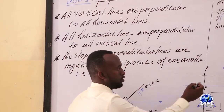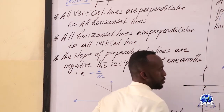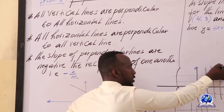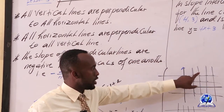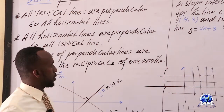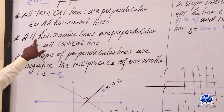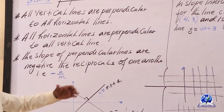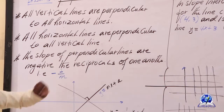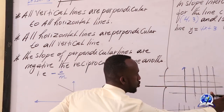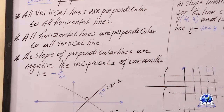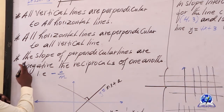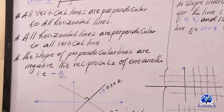If you want to see the vertical lines, the horizontal lines are perpendicular. If you want to see the horizontal lines, the horizontal lines are perpendicular to all vertical lines. The vertical line is the vertical line.